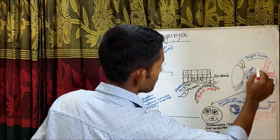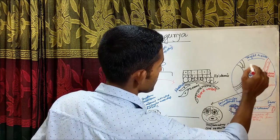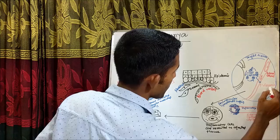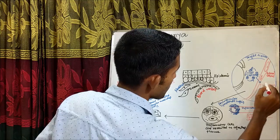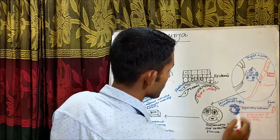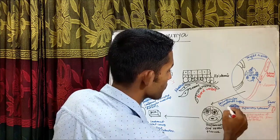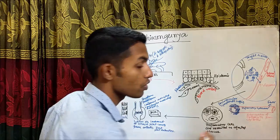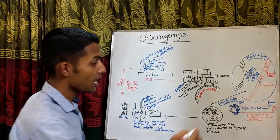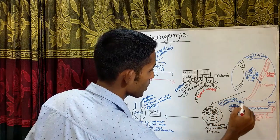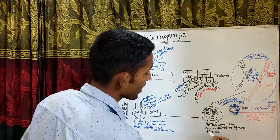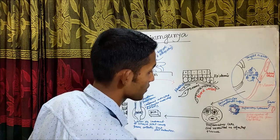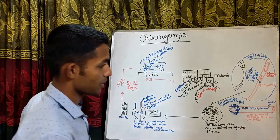After viral replication in the target tissues, there is increased viremia, and due to this increased viremia, there is release of inflammatory cytokines in the blood vessels, which causes fever. Sometimes there is perivascular lymphocytic cuffing and extravasation of erythrocytes from the capillaries.